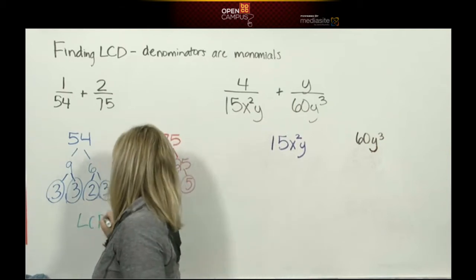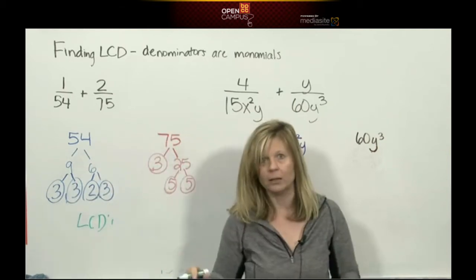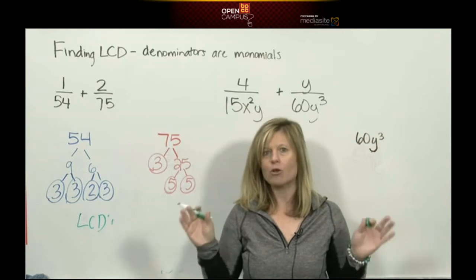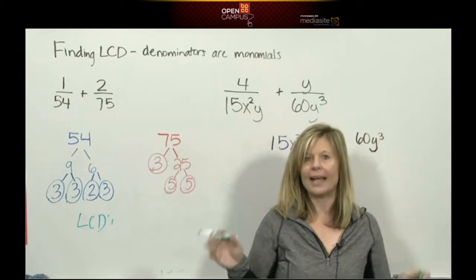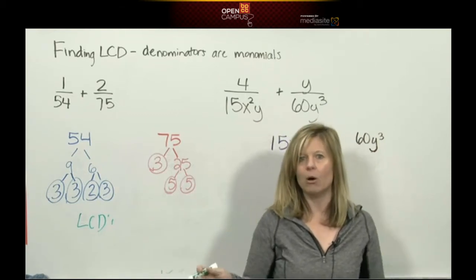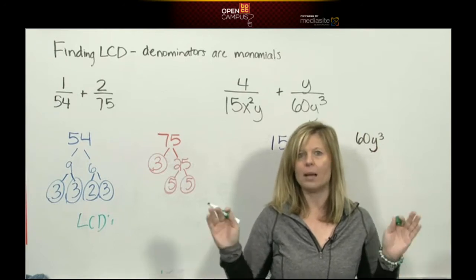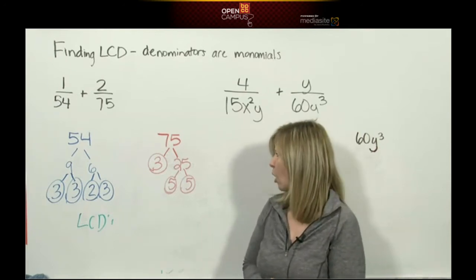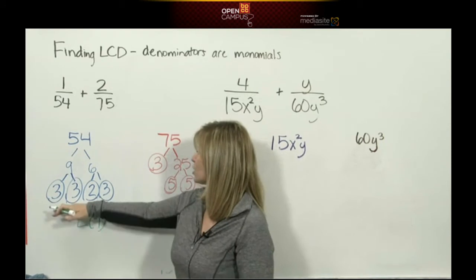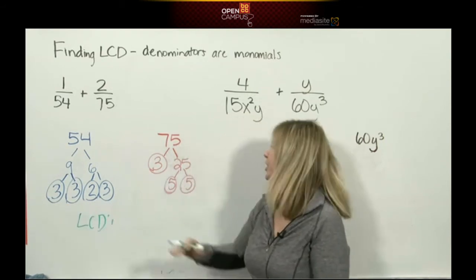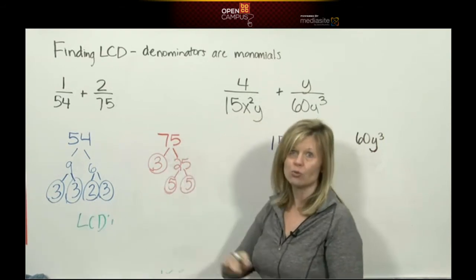So to find the least common denominator, once you're done factoring, you then compare the trees. You look at each tree and you take the most of every prime number. So let's start: this tree has one 2, this tree has no 2s. I need the most, so I need that one 2.